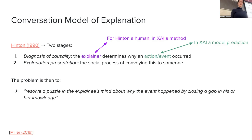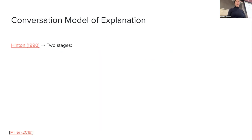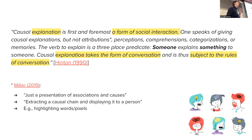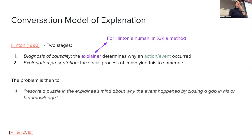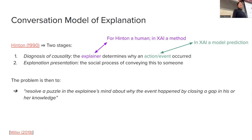We are providing an explanation of the model's behavior such that we close a gap in someone's knowledge about that model. This whole framework shows that we can map human-to-human interaction into human-to-AI interaction. If explanation takes the form of conversation, then it's subject to rules of conversation. When I say rules of conversation, does anything come to mind? If you have taken an NLP course or any other linguistics course, you have probably heard about the Grice's maxims proposed by Paul Grice, which are rules of cooperative conversations.